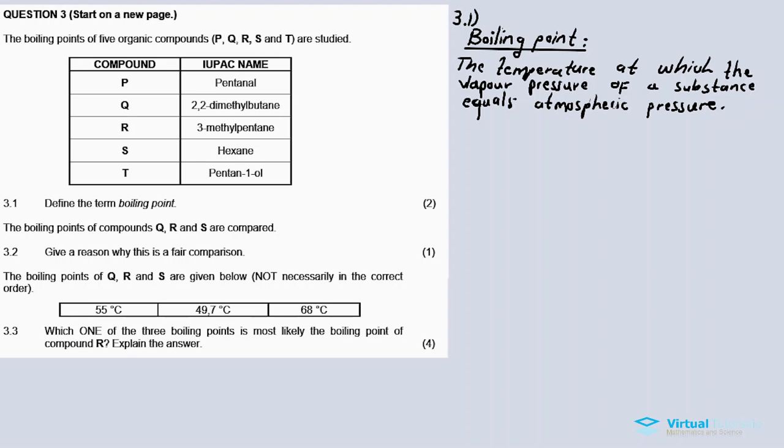The boiling points of compounds Q, R, and S are compared. P is an aldehyde, Q, R, S are alkanes, and then T is the alcohol. But the reason why this is a fair comparison is that Q, R, and S, which are the compounds in question, belong in the same homologous series or homologous group. So this is a fair comparison.